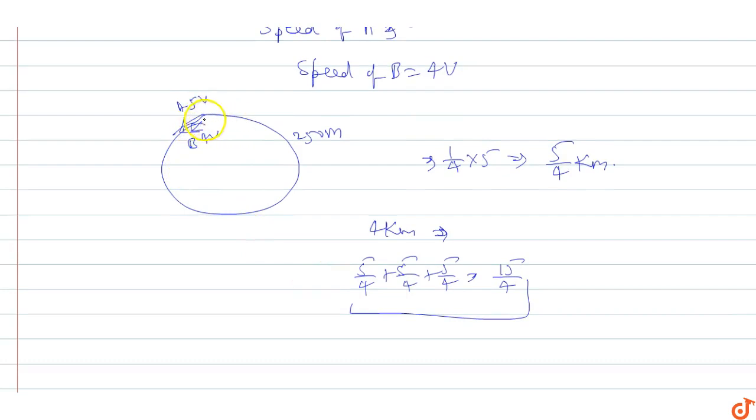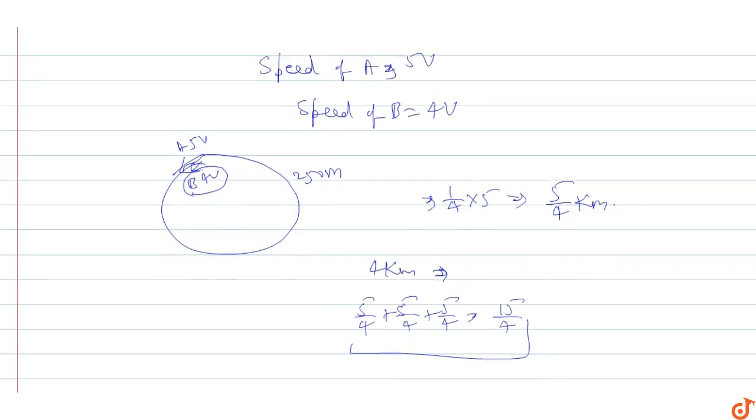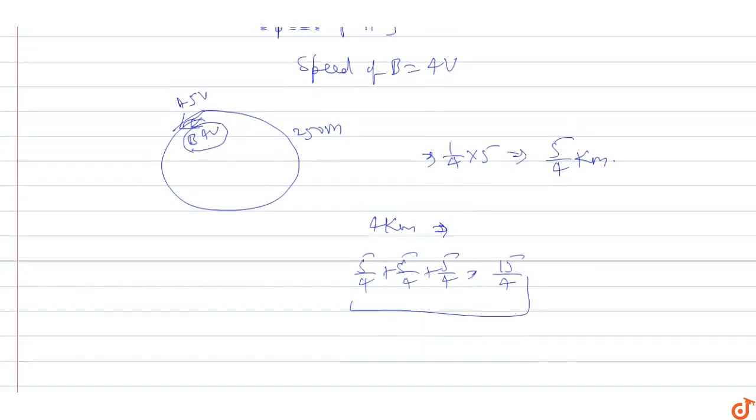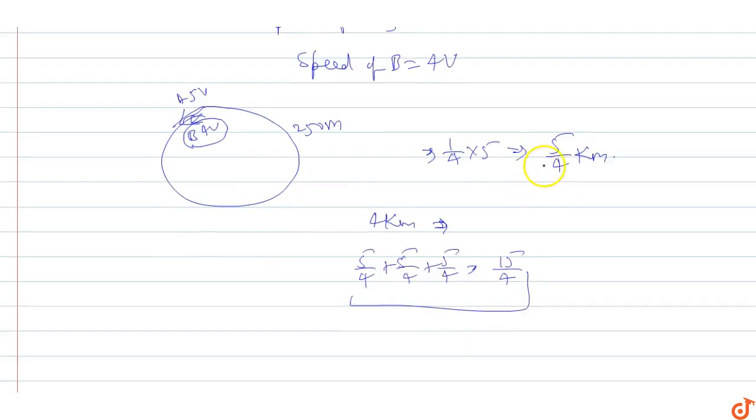Because every 5 rounds A will cross B once in every 5 rounds, in the total race of 4 km, A crosses B 3 times. Because 5 rounds of total distance is 5/4, so 4 km is 15/4.